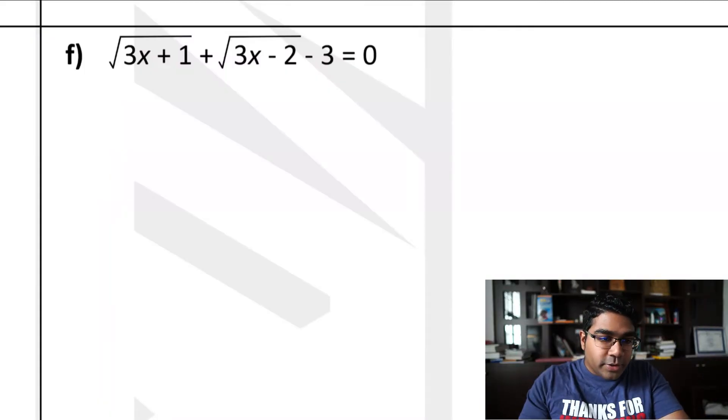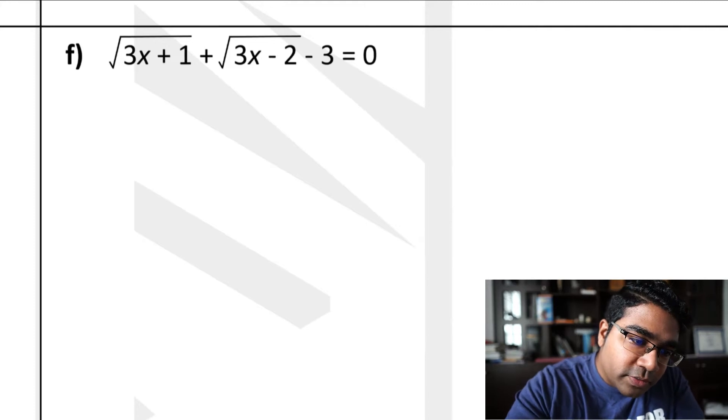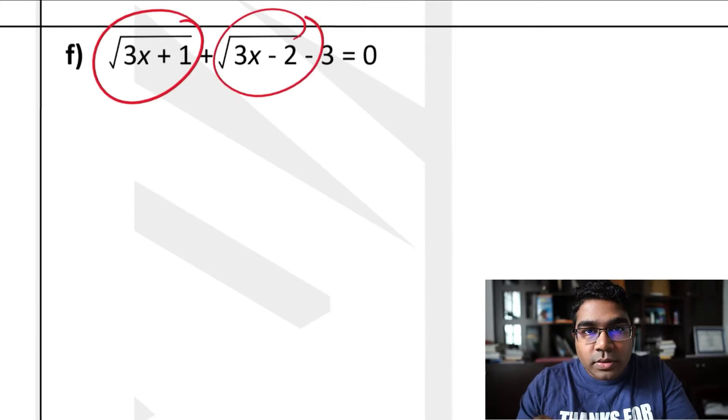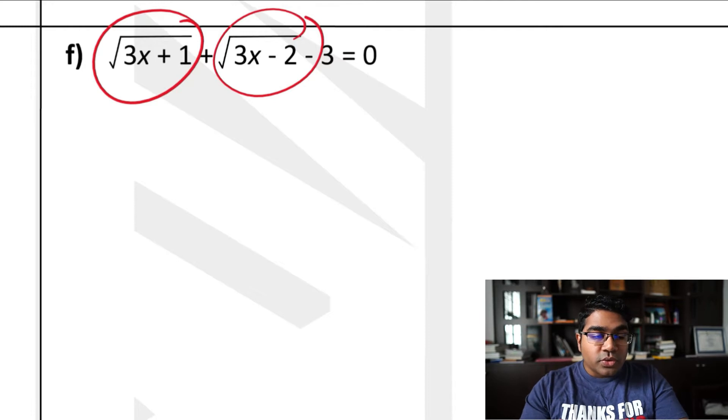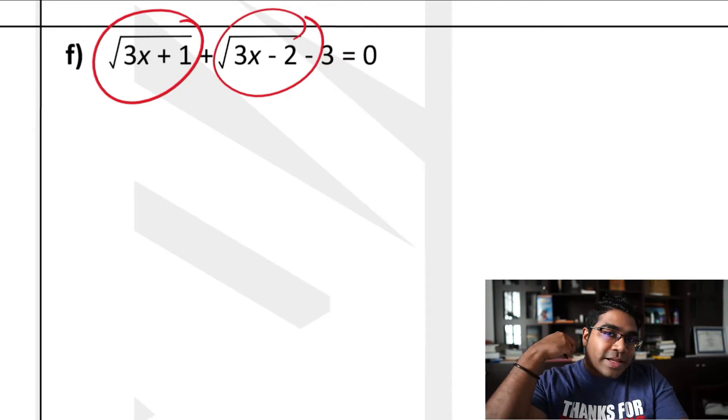Hey guys, in this video we'll be solving this problem. Let's get right to it. Here you see that we have two square roots, and so when we have two square roots, what we need to do to solve this is double squares. You have to square the equation twice.